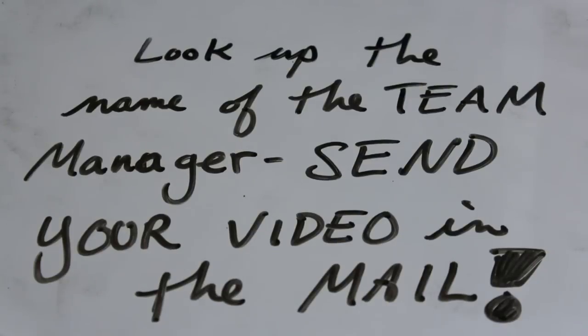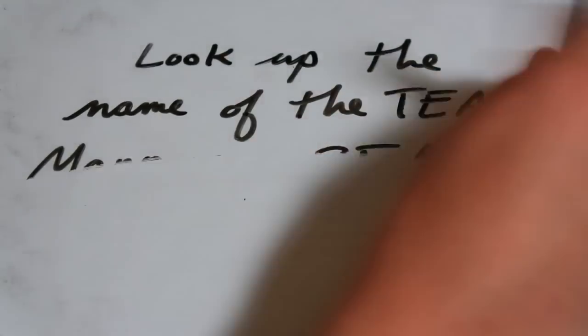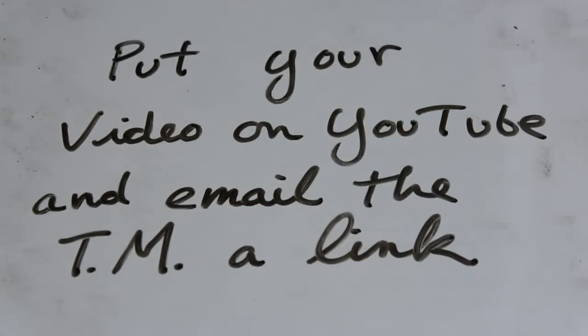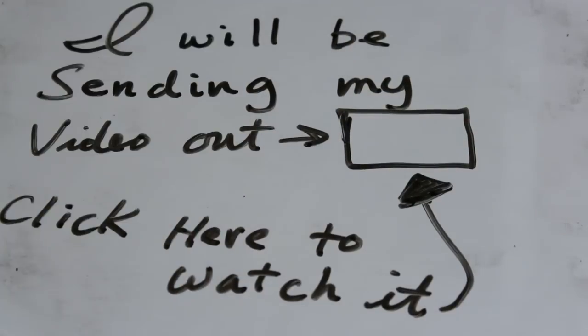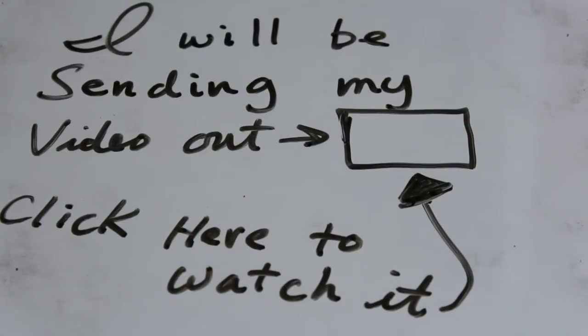Now one way to get them your video is to look up the address. And a lot of times if you go on the website, there'll be a submission place for videos, or for reaching the team manager directly, and you can send them your video in the mail. The other way is to put your video on YouTube, and email the team manager a link. Now I wouldn't send a team manager 5,000 emails, because he's probably just going to get annoyed at you, and not want to watch your video anyways. But send him your video, and let him check it out.